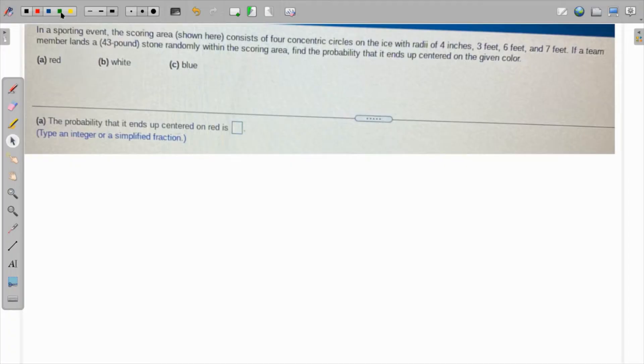In this sporting event, the scoring area consists of 4 concentric circles with radii 4 inches, 3 feet, 6 feet, and 7 feet.